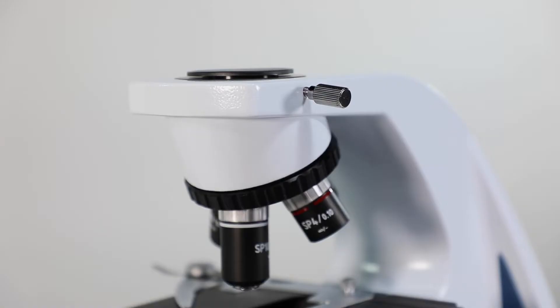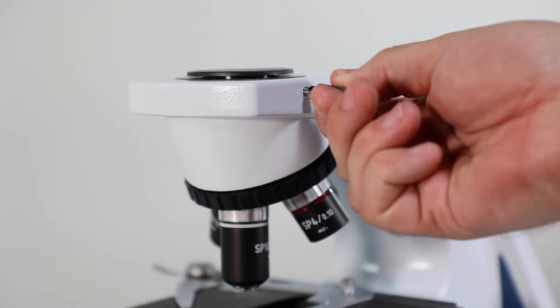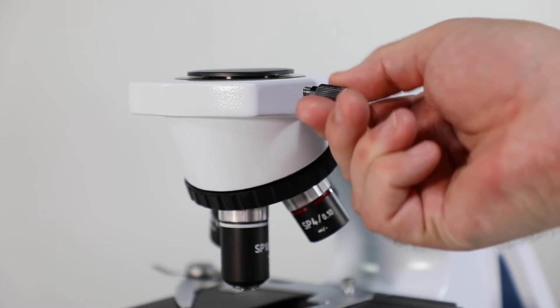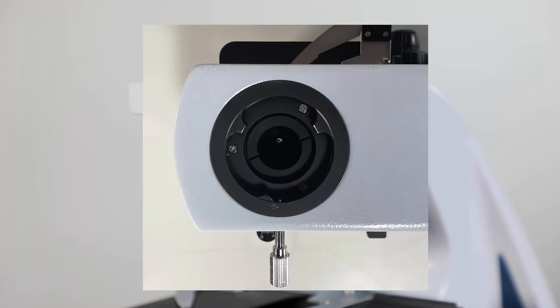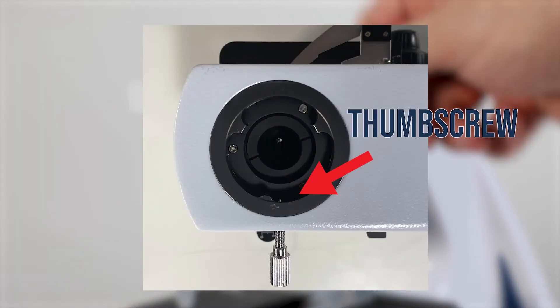Let's move on to installing your microscope head. Loosen the thumb screw on the body of the microscope and remove the plastic cap revealing the head port. Make sure that your thumb screw is loosened enough to be flush with the inner wall of the head port to avoid issues with installation.